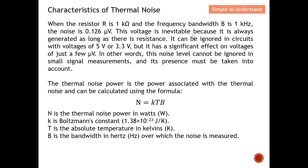This voltage is inevitable because it is always generated as long as there is a resistor. It can be ignored in circuits with voltages of 5 V or 3.3 V, since those are significantly bigger than 0.126 microvolts. However, it has a significant effect on small signals — for example, if you receive a signal of just a few microvolts, this noise becomes comparable and may determine whether you can receive the signal or not. In small signal measurement, this noise cannot be ignored and must be taken into account.